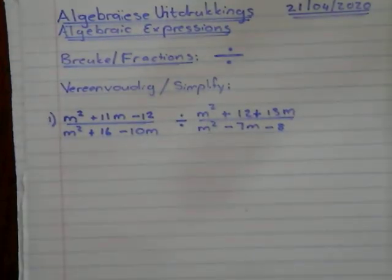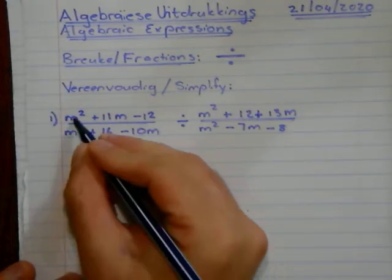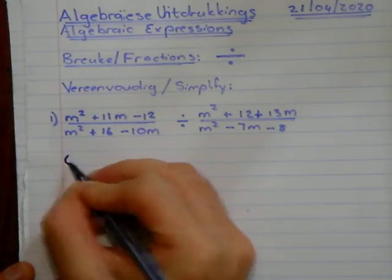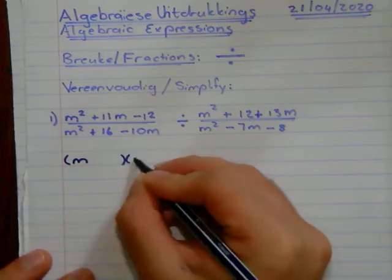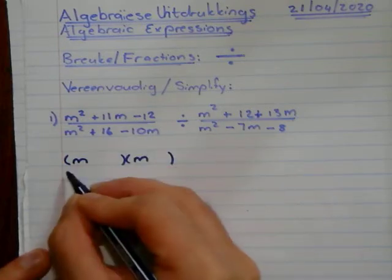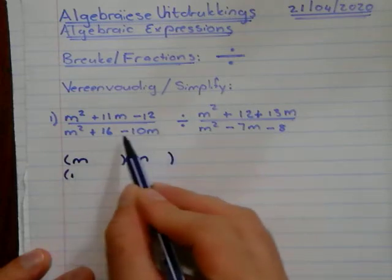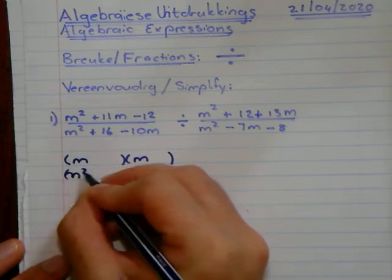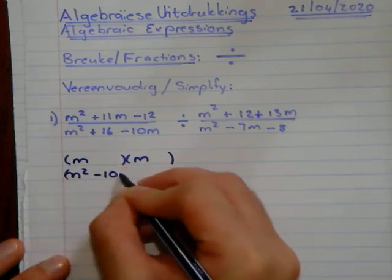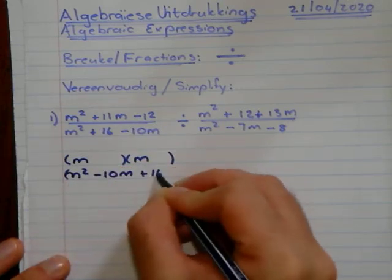So simplify three and four. I can factorize the top and bottom. That's my first step. So I have M, M. At the bottom I first need to rearrange, you must eerst herschrijf, so as M² minus 10M plus 16, before I can factorize.